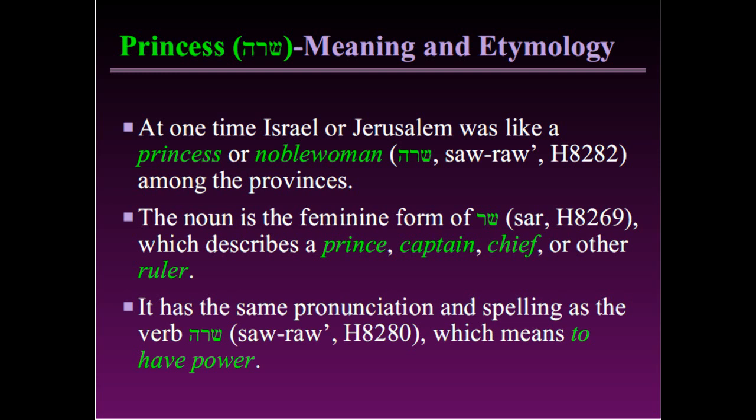This word has equivalents in several other languages. In German, it's Kaiser. In Latin, you have the Caesars. In Russian, you have the Tsar. These all come from the same root word. The noun has the same pronunciation and spelling as the verb 'sarah,' Strong's number 8280, which means to have power.